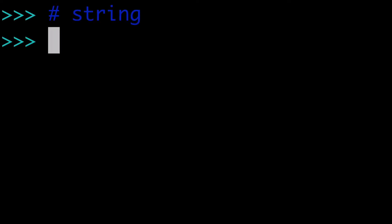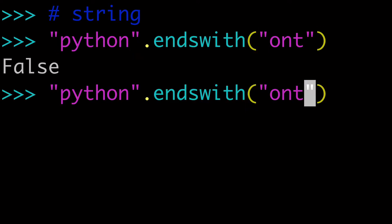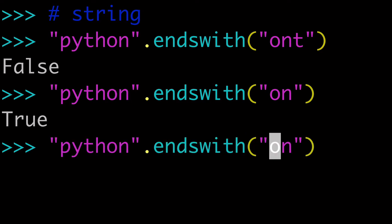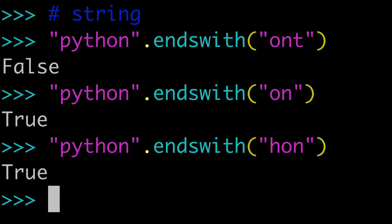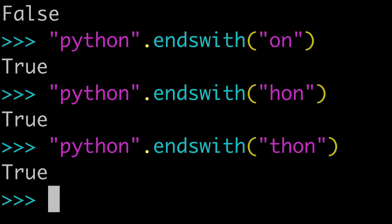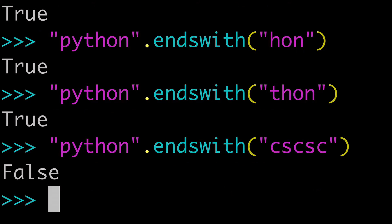Let's start off by passing strings to the endswith string method. Our previous example was endswith 'ont', which we know to be false, or we could pass 'on', which we know to be true. Python does end with 'on'. And using that same logic, of course it ends with 'hon', and of course it ends with 'thon'. So that's starting to make sense. And if we just pass a bunch of random stuff, that's going to be false.